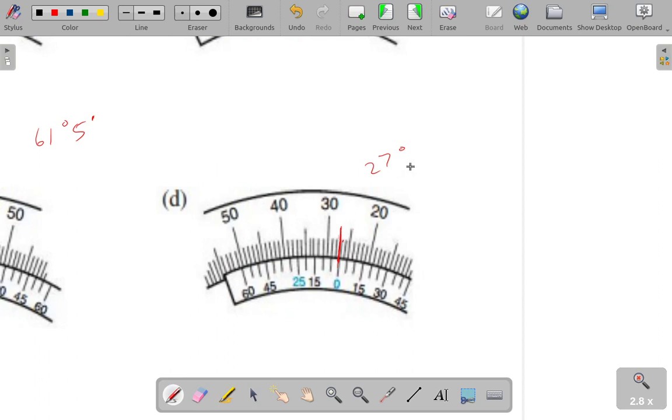And again, 25 minutes. I have no idea how you would get 25 minutes off of a Vernier caliper like this, because it's not, oh no, I guess 25 minutes is one of the ones that's marked, because they mark every 5 minutes.